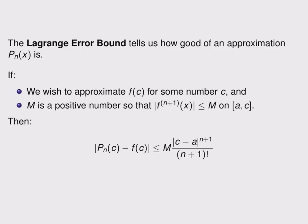Finally, one last idea from this section is the Lagrange error bound. This tells us how good of an approximation a Taylor polynomial of order n is. If we want to approximate f of c for some number c, and if we can find a positive number m such that the (n+1)-th derivative of f is always between negative m and m on the interval from a to c, then the difference between our polynomial at c and the real function's value at c is less than or equal to the given formula. Although this looks complicated, it allows us to calculate an estimate for how close our Taylor polynomial really is to the function. It turns out we can use this to show that many Taylor series actually converge perfectly to the function that the Taylor polynomials are approximating.